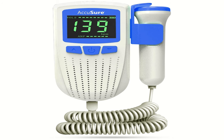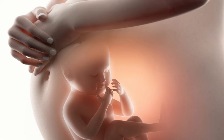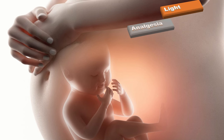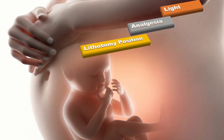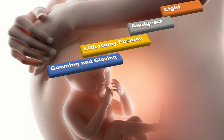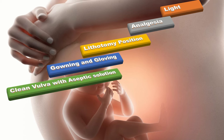Before starting the procedure, I will check the fetal heart rate. In the presence of adequate light and analgesia, I will put the patient in the lithotomy position. After gowning and gloving, I will clean the vulva with an antiseptic solution and drain the bladder.